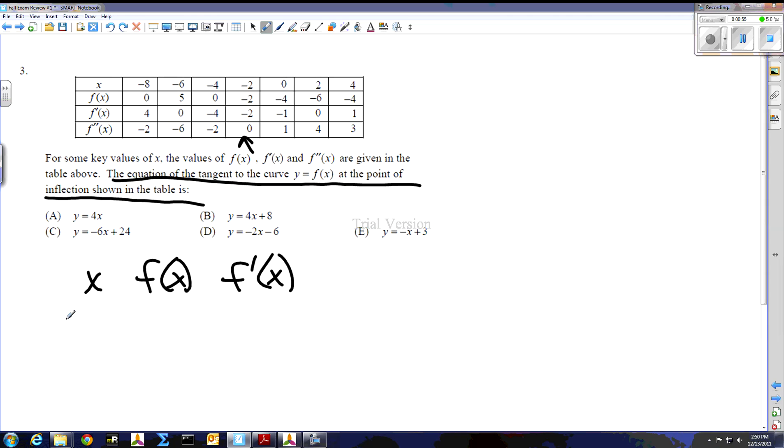Our x value is negative two, our function value is negative two, and our first derivative is negative two by simply reading off of this column that we're given here where the second derivative equals zero.